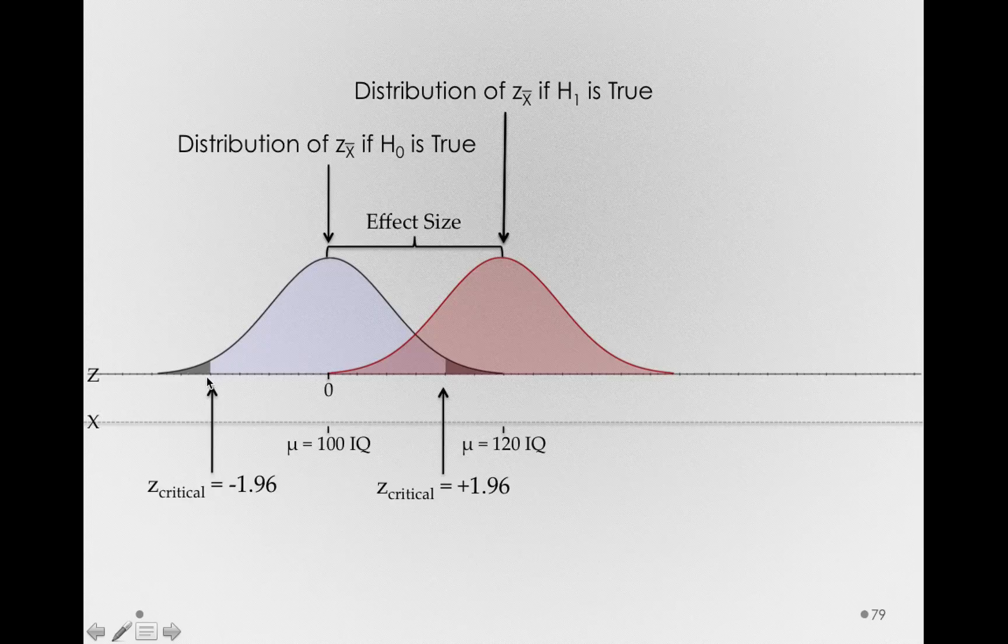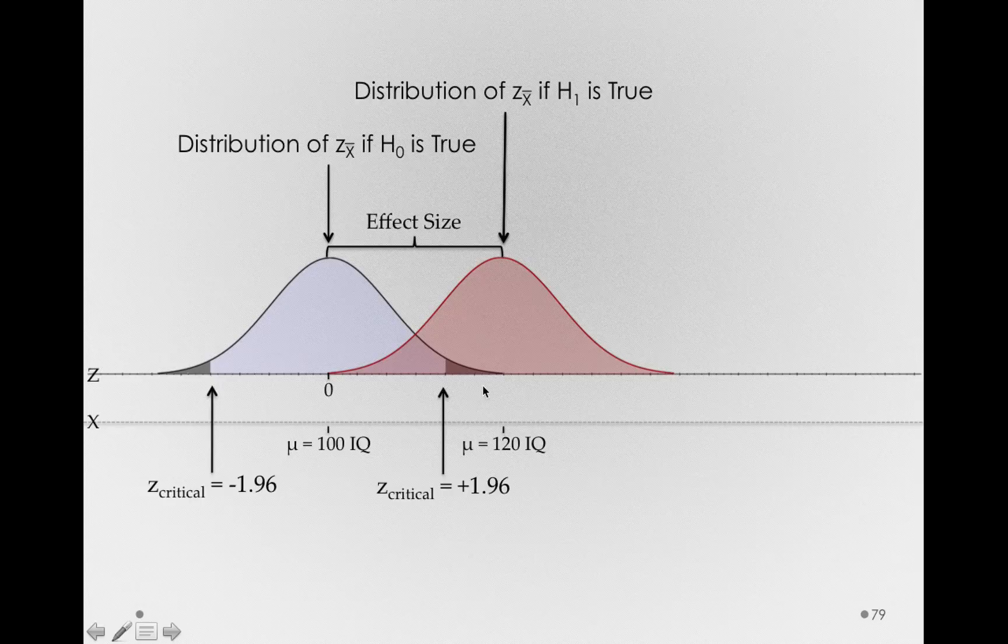That is, the negative 1.96 z-score out to negative infinity, and the positive 1.96 z-score out to positive infinity. Those are the regions we picked with an alpha of 0.05, where if we got a sample more extreme, we would be willing to reject the idea that our sample is coming from the blue distribution.